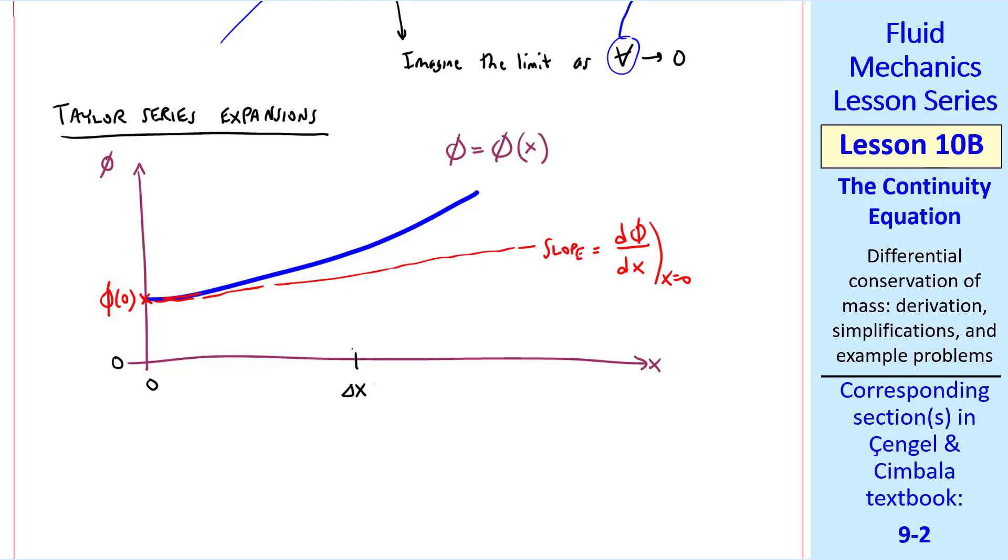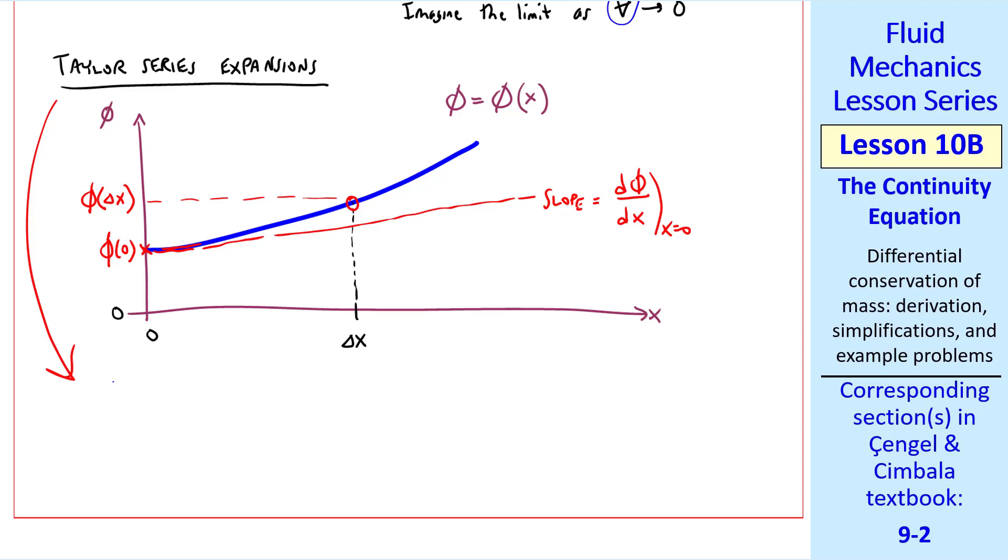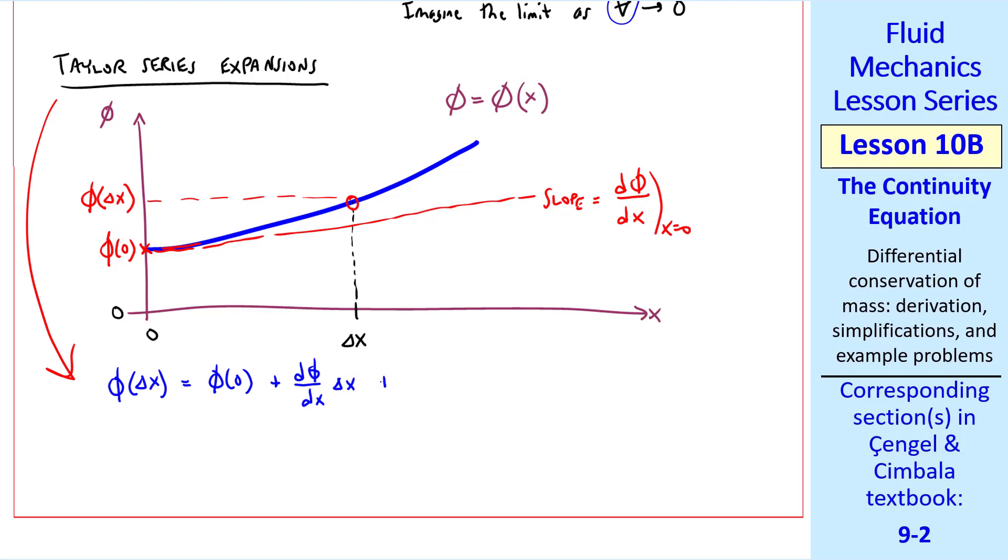At some distance delta x, we want to calculate this point, phi of delta x. The Taylor series expansion is that phi of delta x is equal to phi of zero plus d phi dx delta x plus 1 over 2 factorial d squared phi dx squared delta x squared plus an infinite series of higher order terms. As delta x approaches zero, these higher order terms, like delta x squared, delta x cubed, etc., become negligible.